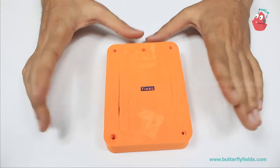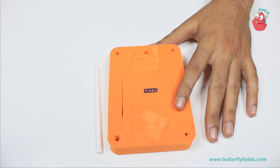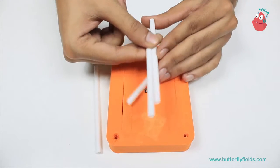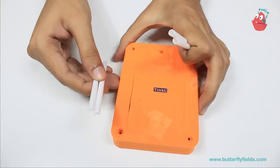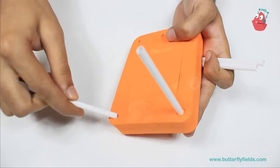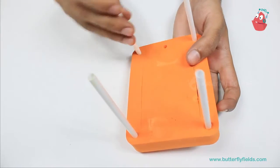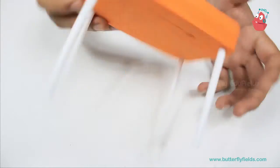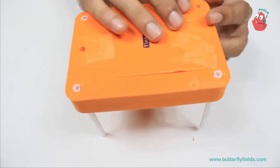First we will take this block and take four straw pieces of equal length, and what we are going to do is attach them in these holes and make sure that all these are at the same level.